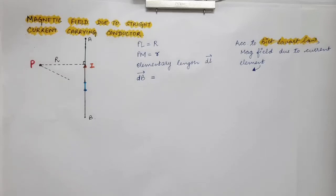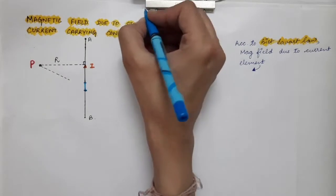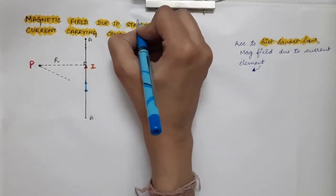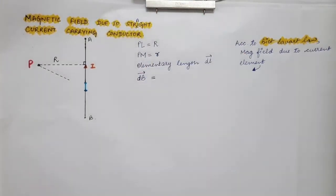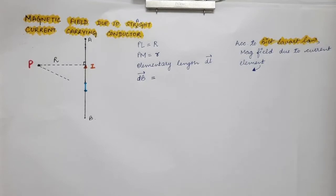Now we are going to find out the expression of magnetic field due to a straight current-carrying conductor. Using Biot-Savart law, we will be finding out the expression of magnetic field due to a straight current-carrying conductor.